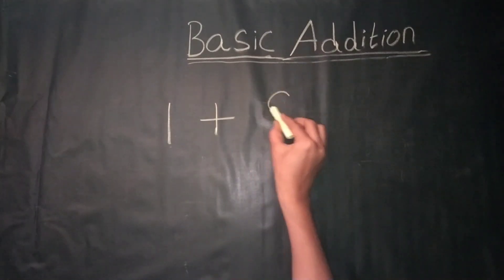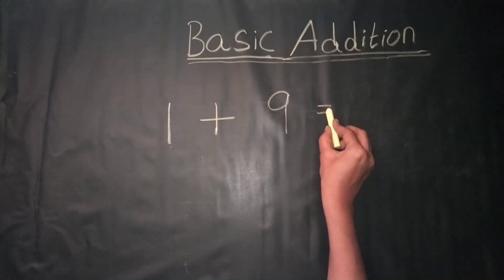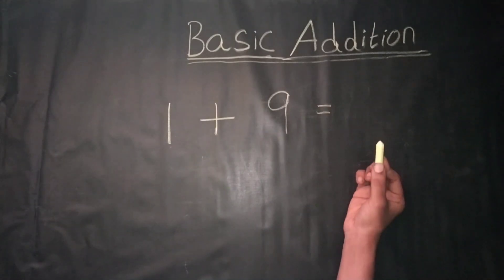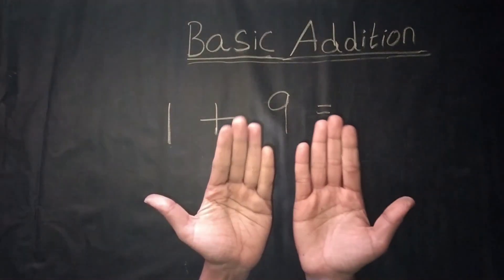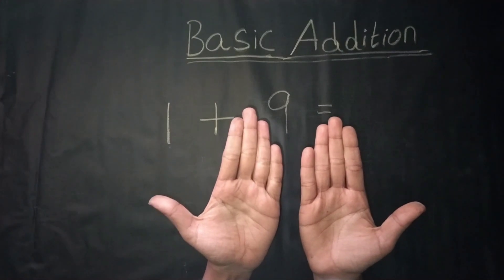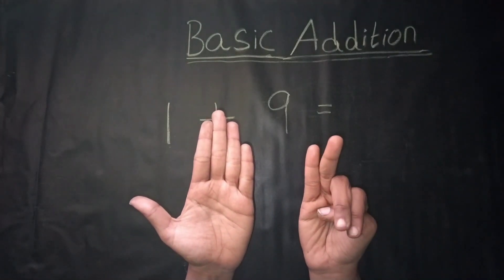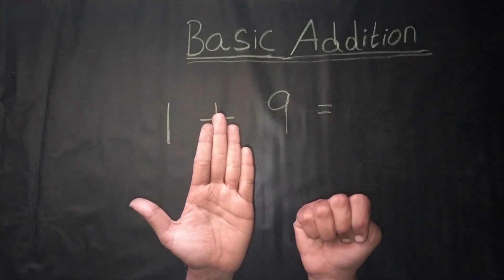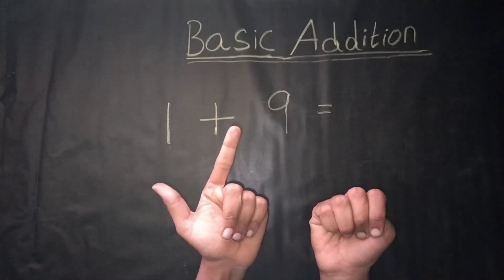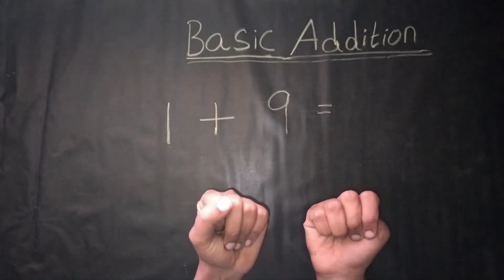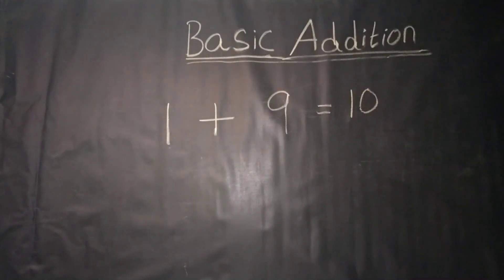1 plus 9 is equal to — counting by fingers, 1 plus 9. Count together: 1, 2, 3, 4, 5, 6, 7, 8, 9, 10. We get the answer: 10.